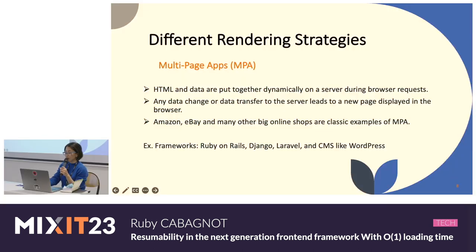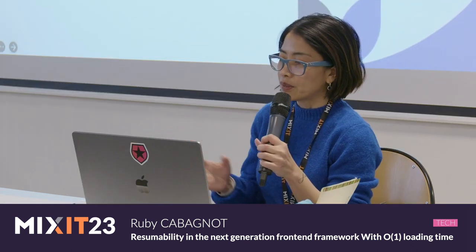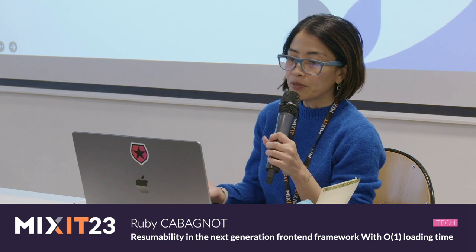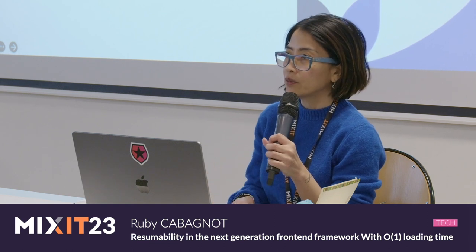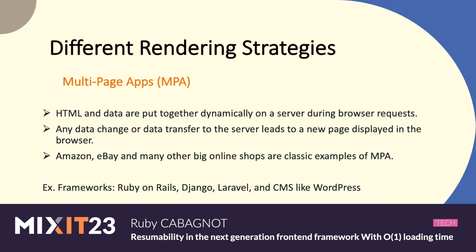Then we have MPAs or Multi-Page Apps. HTML and data are put together dynamically on a server whenever a browser makes a request. Any data change leads to a new page being displayed in the browser. Examples include Amazon and eBay. Frameworks for this include Ruby on Rails, Django, Laravel, and CMS platforms like WordPress.